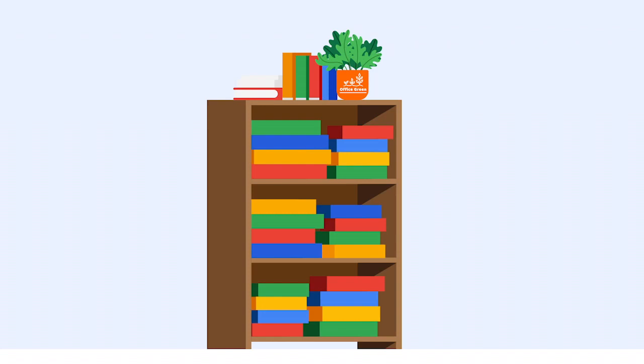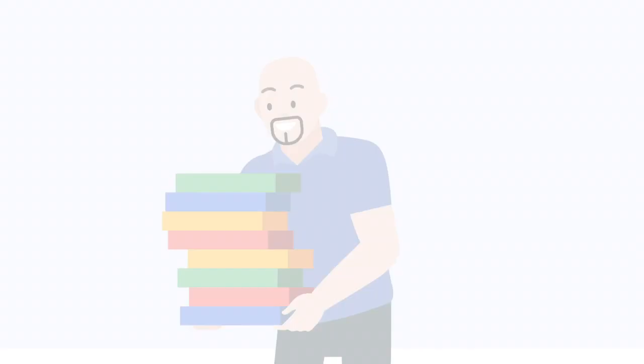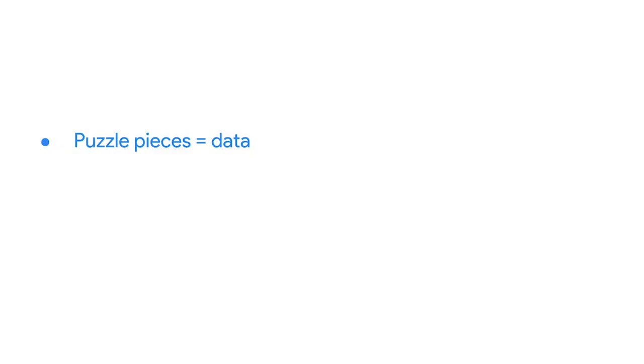In data analytics, a summarized collection describes identifying the data you need and gathering it all together in one place. For example, let's say you have a cabinet full of different puzzles. One day a shelf breaks and all the boxes topple over, scattering the puzzle pieces everywhere. To get each puzzle organized again, you need to identify the pieces that correspond to each particular puzzle, gather them together, and put them back into their correct boxes. In data, the puzzle pieces represent the data that lives in different separate data sets. Getting them organized is the aggregation process.